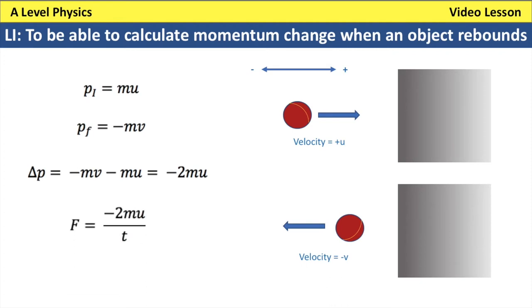From there, we can work out the force that the wall puts on the cricket ball. Because force is change in momentum divided by time, F comes out as minus 2mu divided by t.